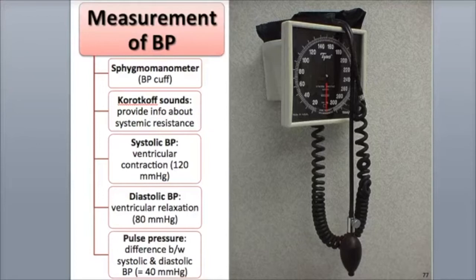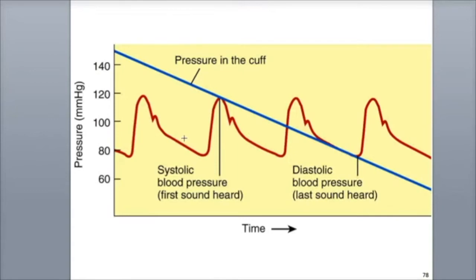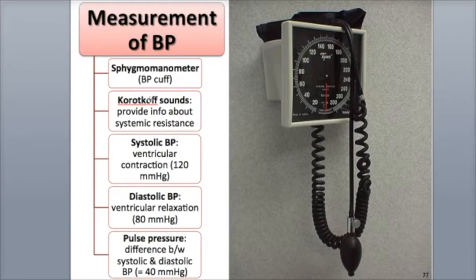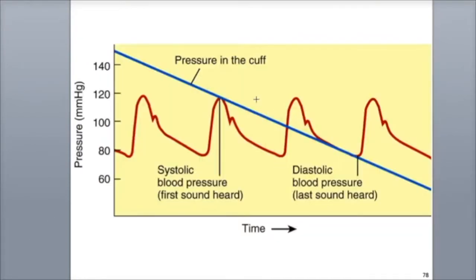As the artery opens, blood begins to move through the vessel, which creates the first sound heard in the stethoscope. Here we see on this graph showing pressure in millimeters of mercury over time. This is the location where the first sound is heard, as the pressure in the cuff is gradually released. These sounds are called the Korotkoff sounds. The first sound represents the systolic blood pressure in the arteries immediately following contraction of the ventricle.